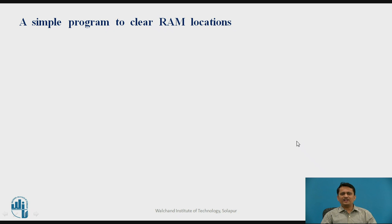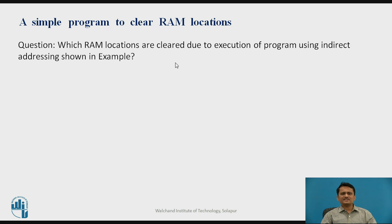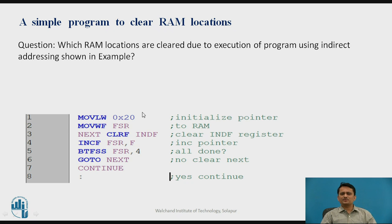Now let us understand indirect addressing through a simple program written for clearing RAM locations. The question is: which RAM locations are cleared due to execution of this program using indirect addressing mode? The first instruction, MOVLW 20h, loads 20h into the working register. Then MOVWF FSR loads that value 20h into the FSR register. Next, CLRF INDF clears the INDF register, but what it actually clears is the register pointed to by FSR.